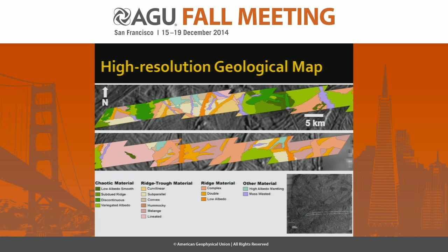This is the geological map of the high resolution. The contacts are based on morphological characteristics. There's a large variety of units that vary greatly from one another. In the regional context we only saw one chaos unit; we now have four: low albedo smooth, subdued ridge, discontinuous, and variegated albedo. In the regional resolution we had one ridge plains unit; now we have six different types in warm earth-tone colors. We also have some ridge planes and other material.